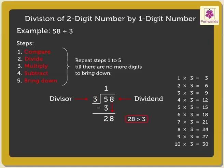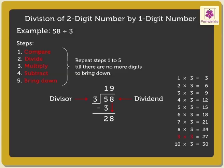28 is greater than 3, so we can divide 28 by 3. Again, using the table of 3, find the product which is equal to or less than and nearest to 28. The nearest product is 27. So, we write 9 above the 8 in the quotient. As we know, 3 into 9 is equal to 27. Write the number 27 under 28.